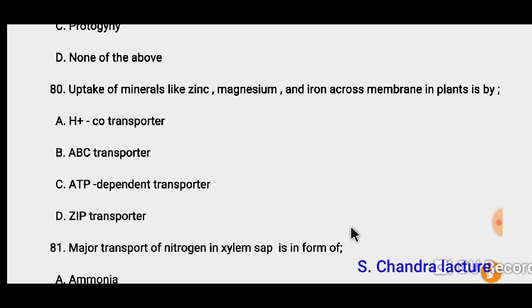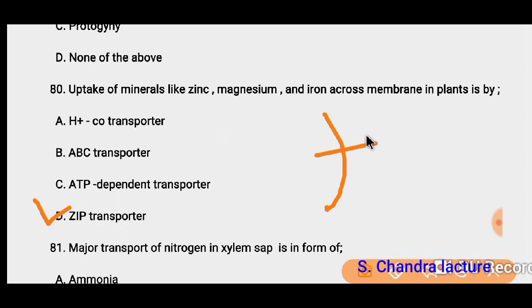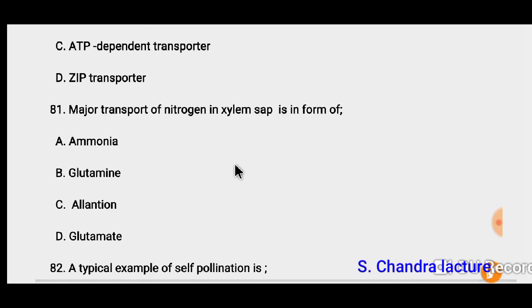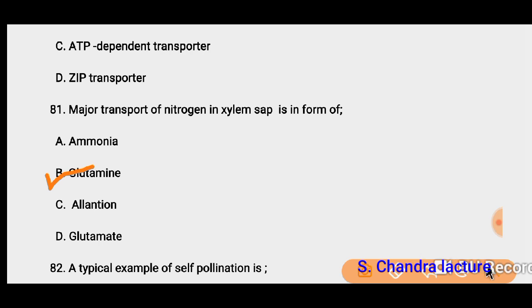Question 80: Uptake of minerals like zinc, magnesium, and iron across membrane in plants is by the ZIP transporter. The plant uses the ZIP transporter system for nutrient uptake of these ions. Question 81: Major transport of nitrogen in xylem sap is in the form of glutamine.